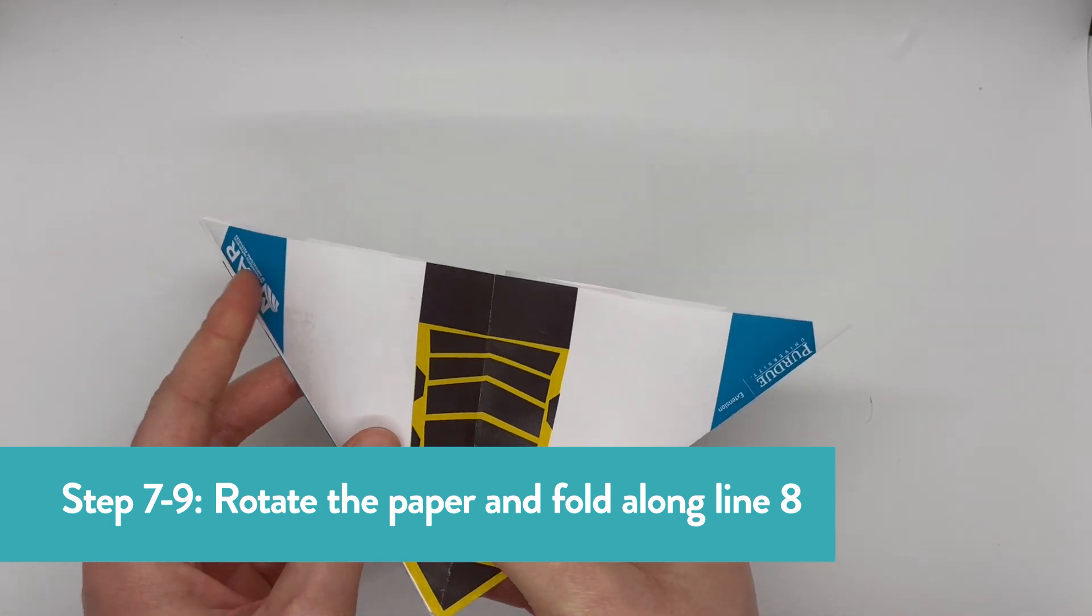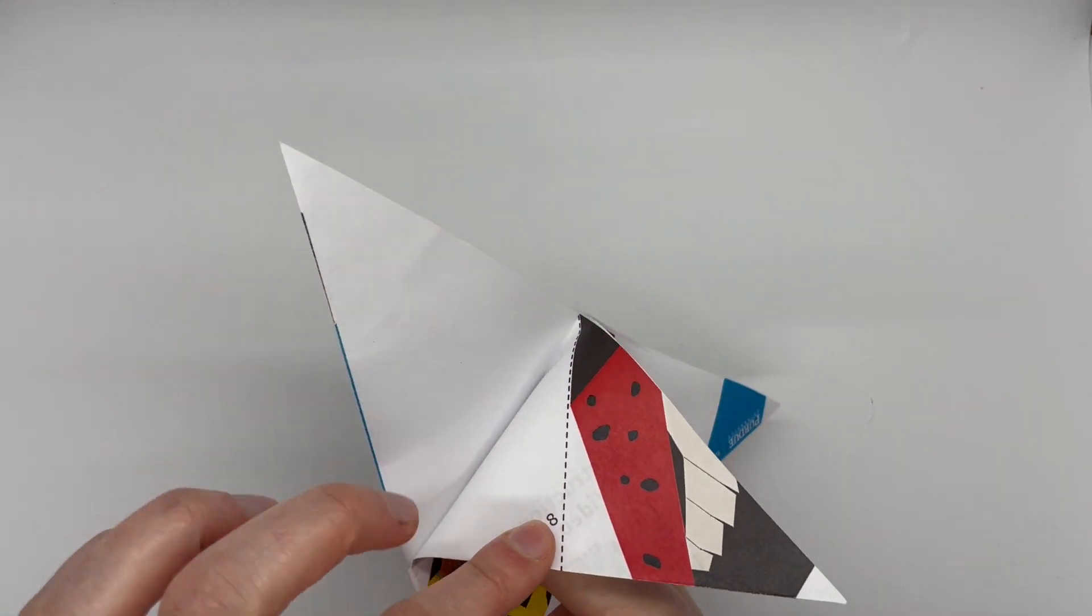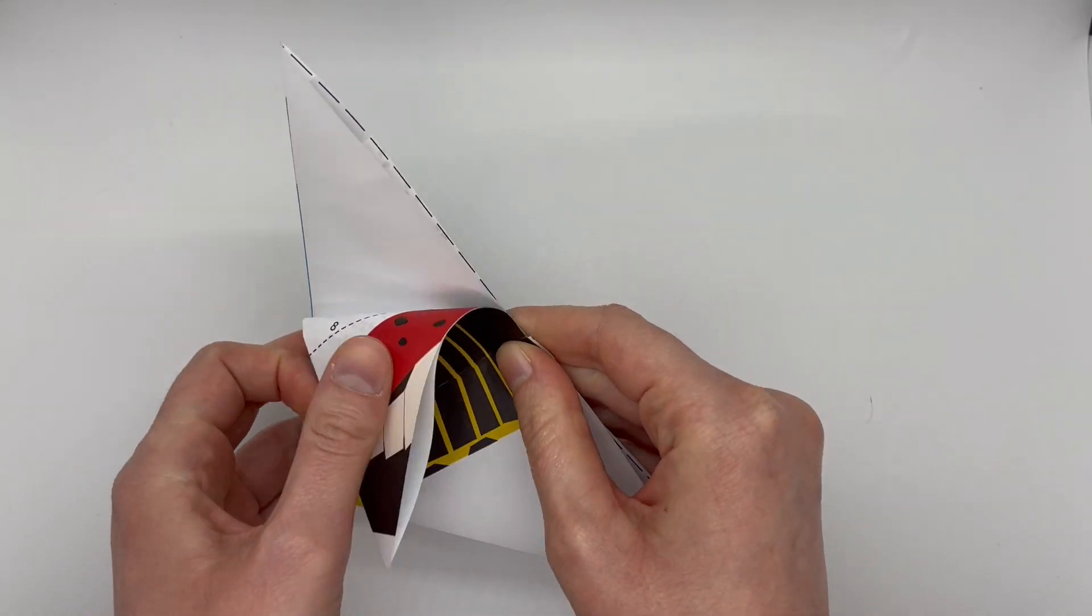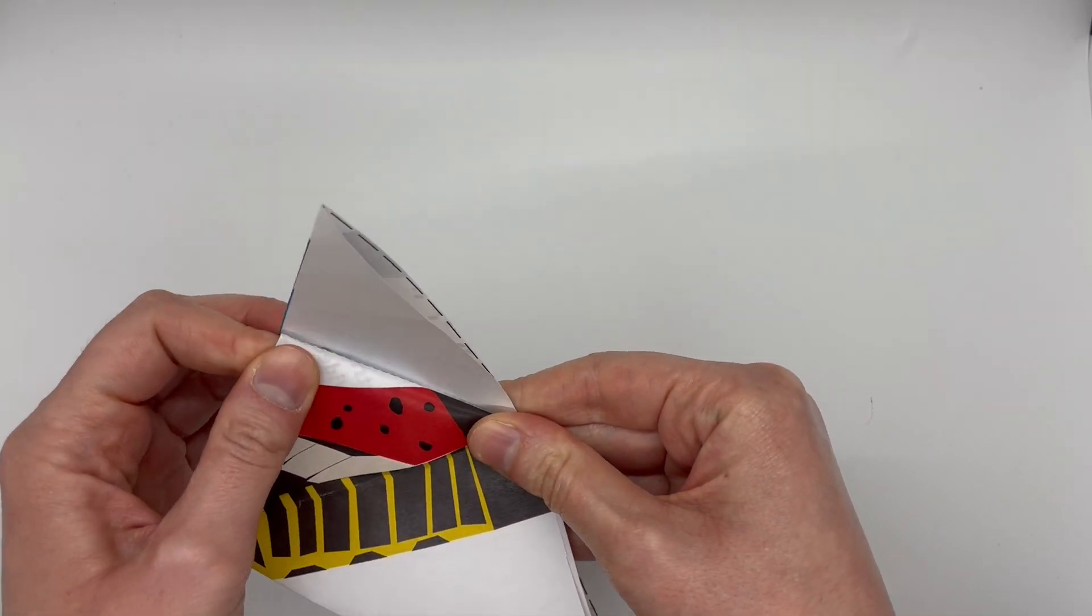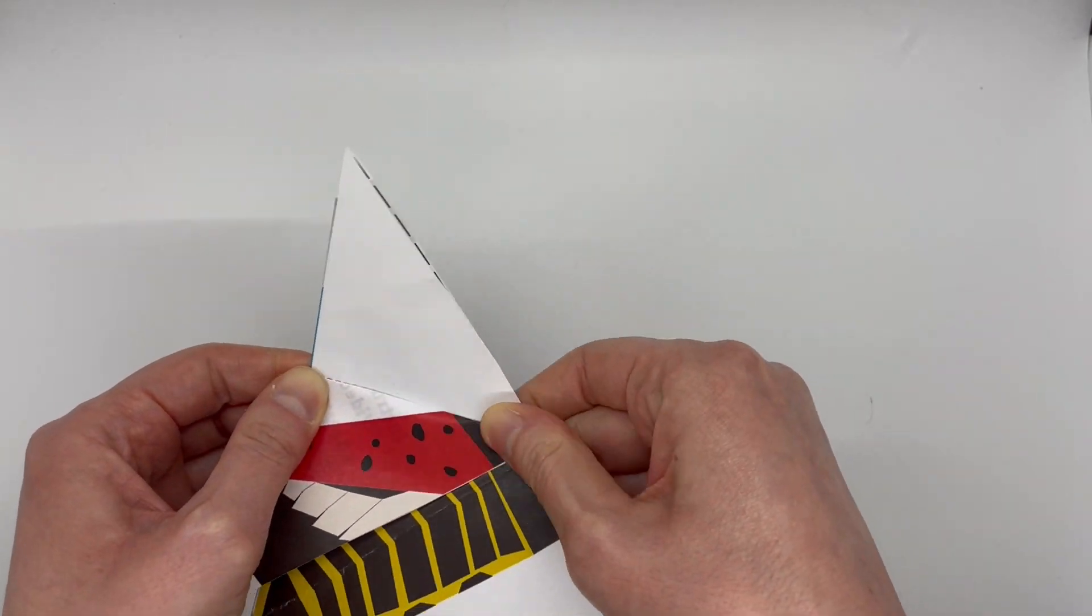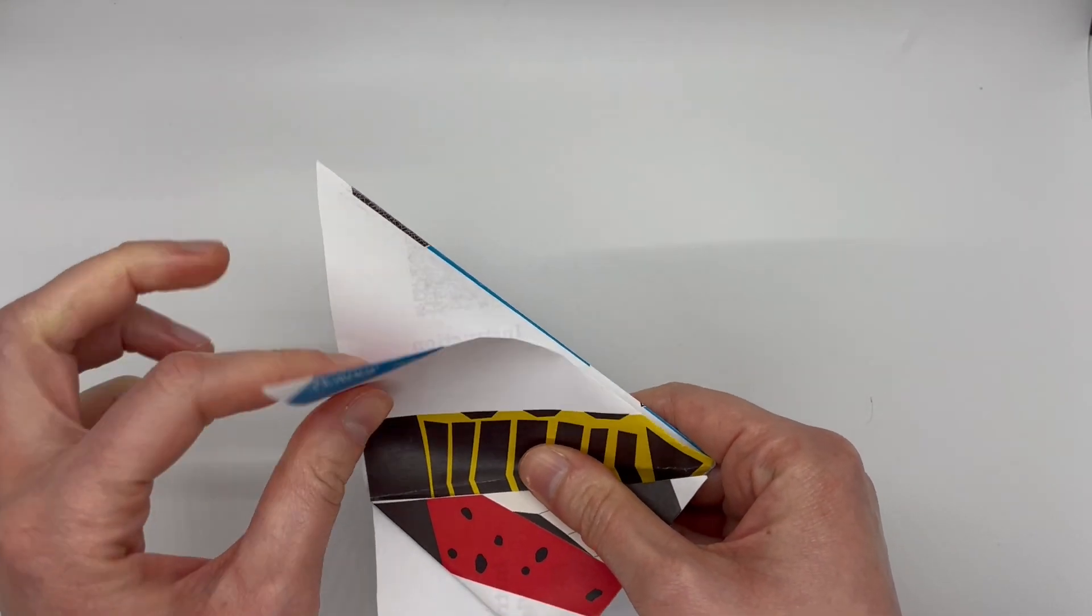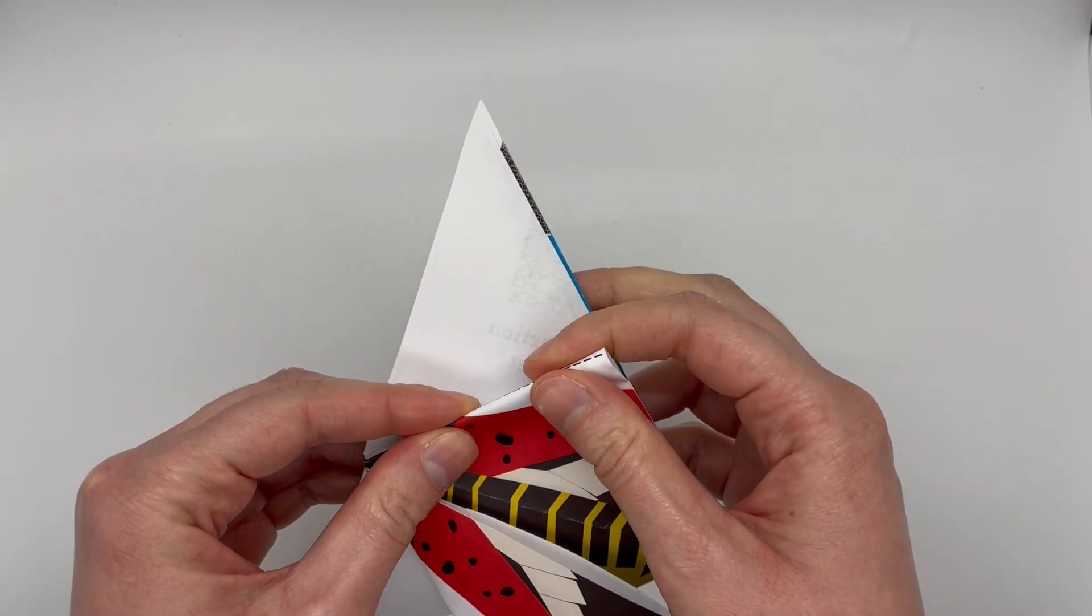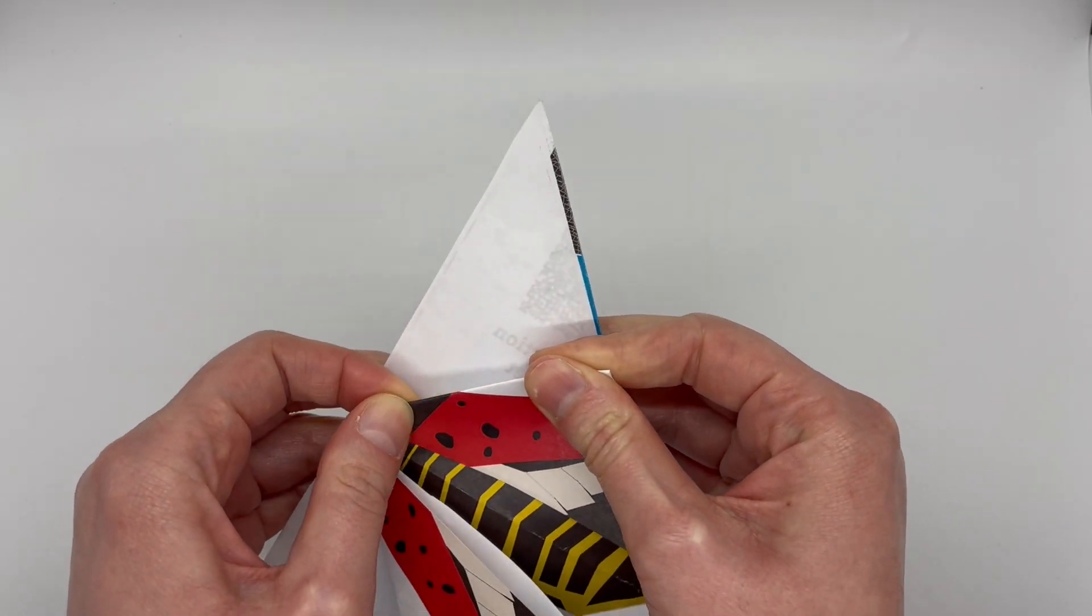Find the lines labeled 8 hidden between the triangle flaps. Fold along the lines labeled 8. Adult spotted lanternflies have strong legs that let them jump long distances and can fly. If you see one, take a picture first in case it escapes.